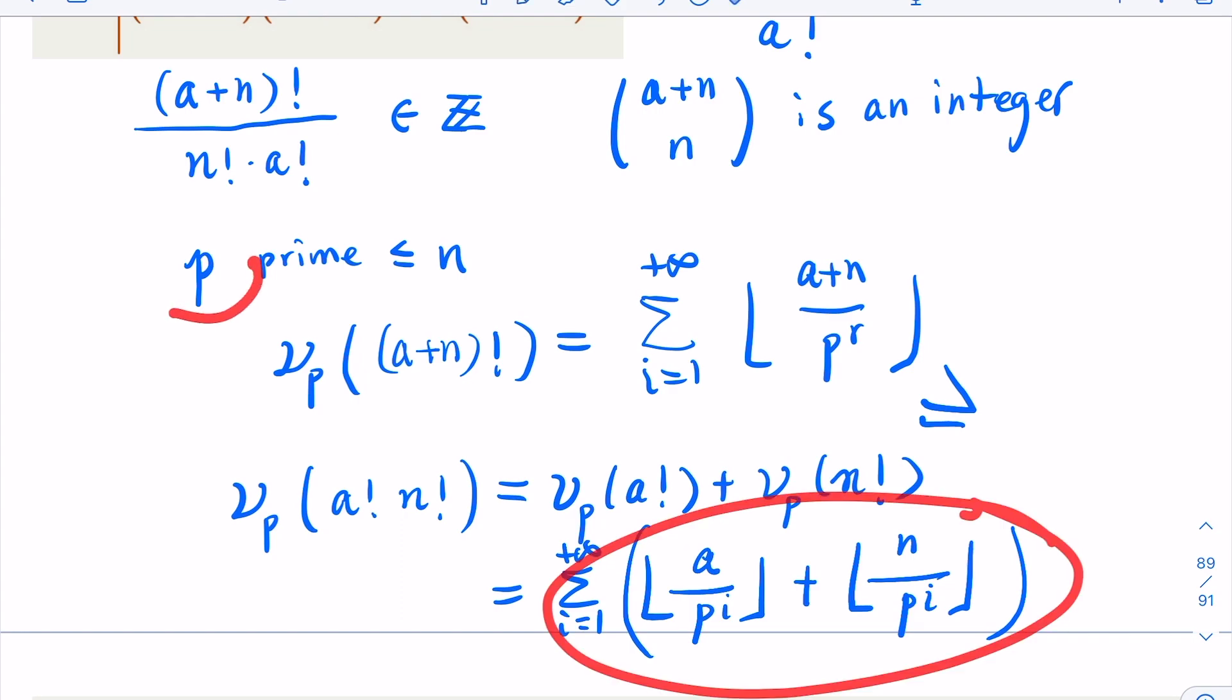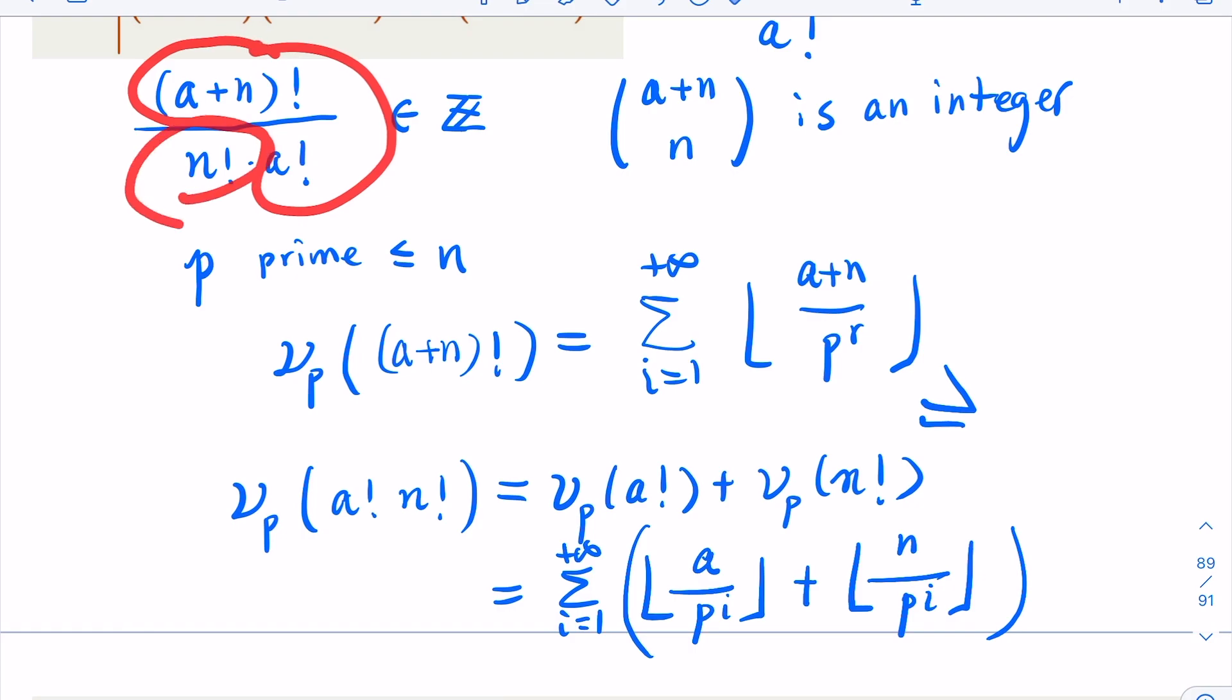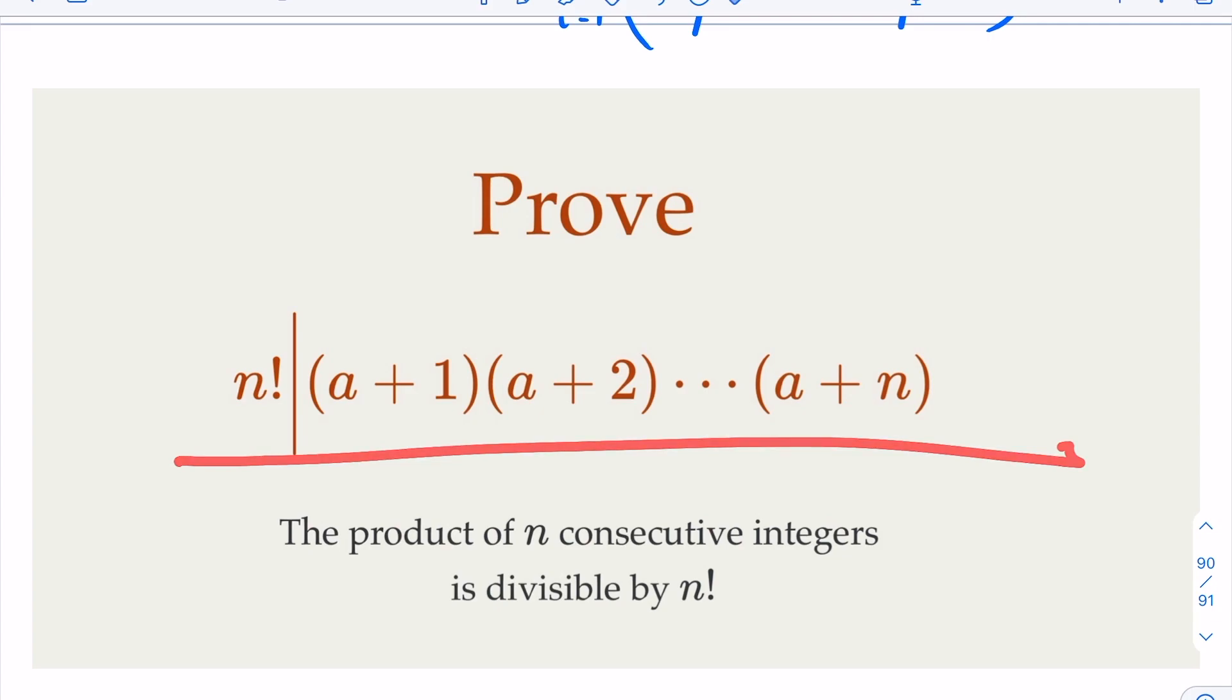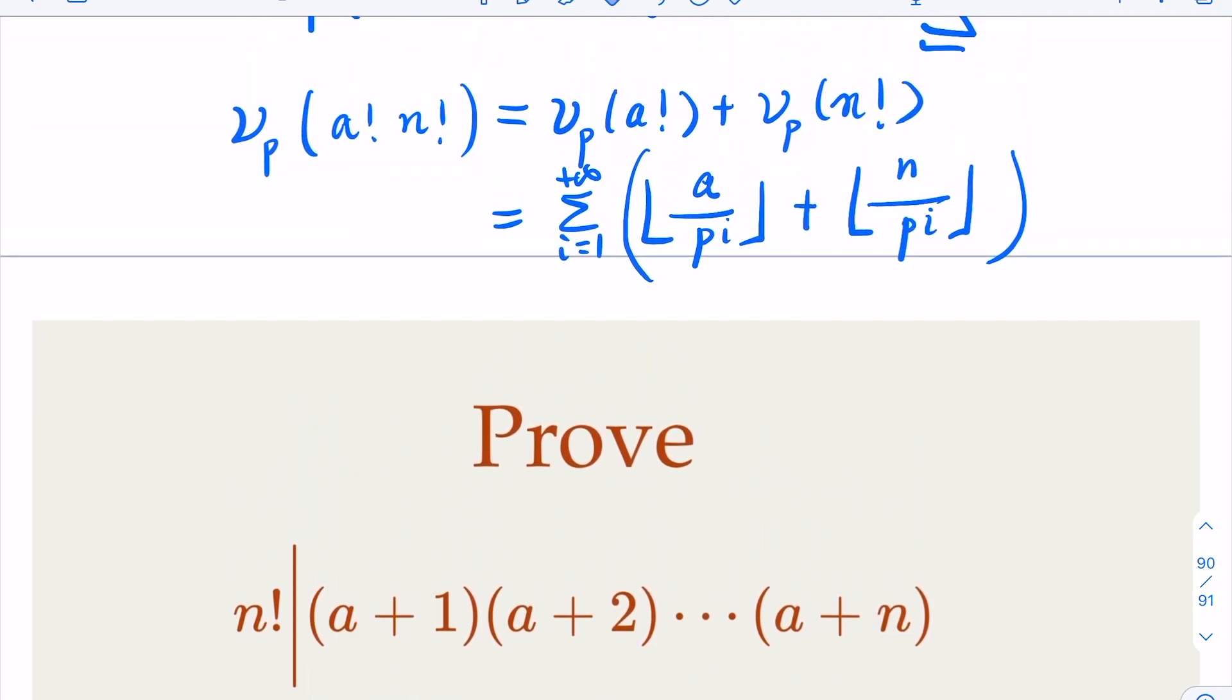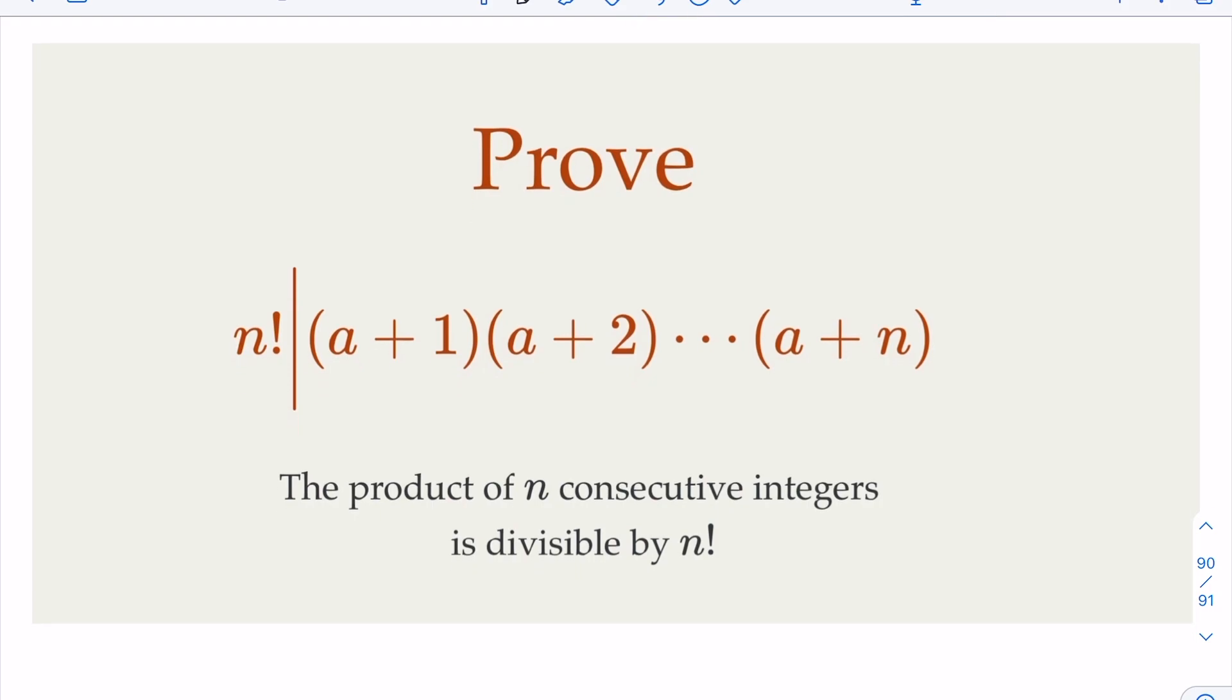So that is, this is an integer. If that is an integer, that means this part must be a multiple of n factorial. So we have proven the fact by considering what is called the ν function or p-adic value of a prime with respect to some factorial number here. So we're going to use this fact a lot in certain number theory proofs. That is, the product of n consecutive integers is divisible by n factorial. All right, hope you enjoy the video. Please like and share.